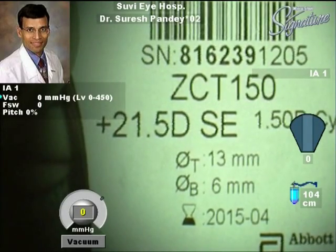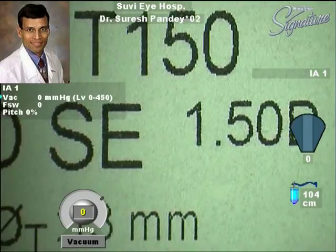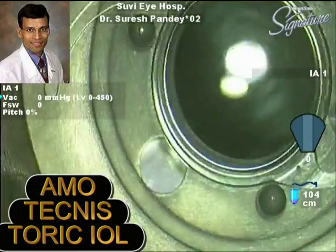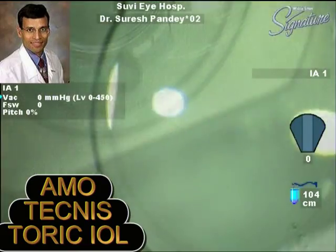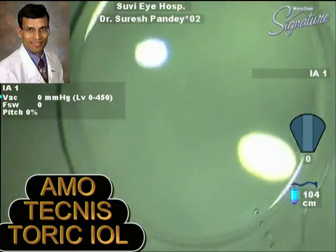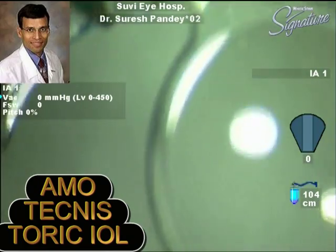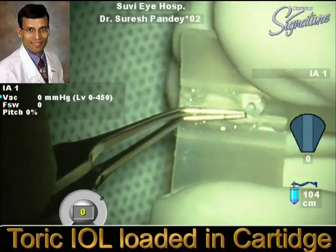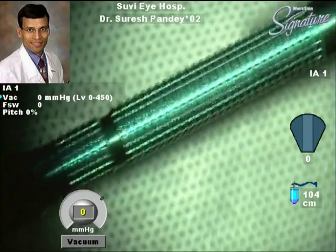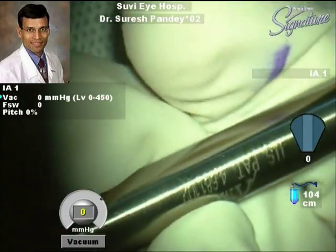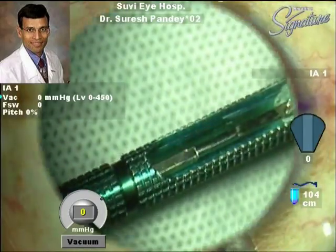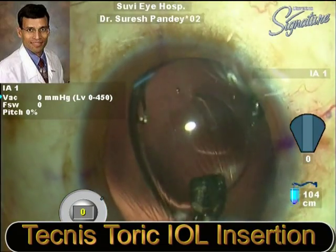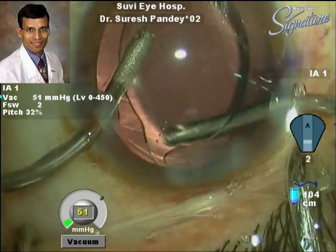In this particular patient the ZCT150 model was used. The patient's IOL power was +21.5 diopters with a 1.5-diopter cylindrical add as per this IOL configuration. As you can see, the IOL has four marks to help in the alignment with the astigmatic axis. The IOL is placed in the injector and using the Emerald injector the Technis Toric single-piece IOL is being implanted. The IOL is very well placed in the capsular bag and the viscoelastic is being removed from under the IOL.